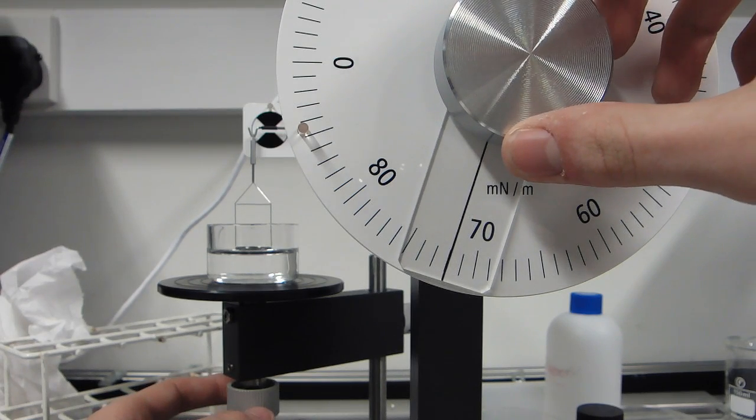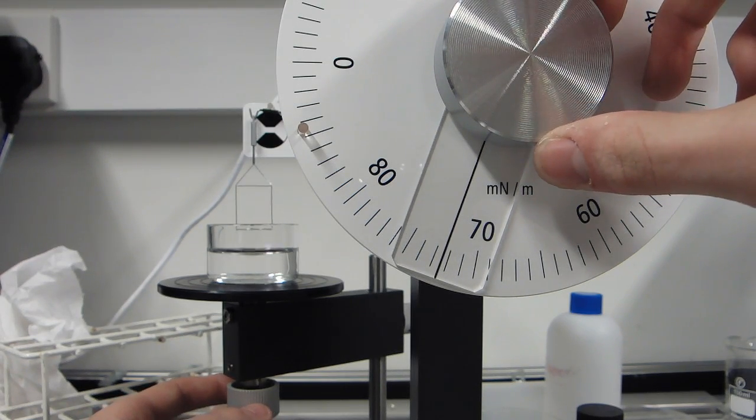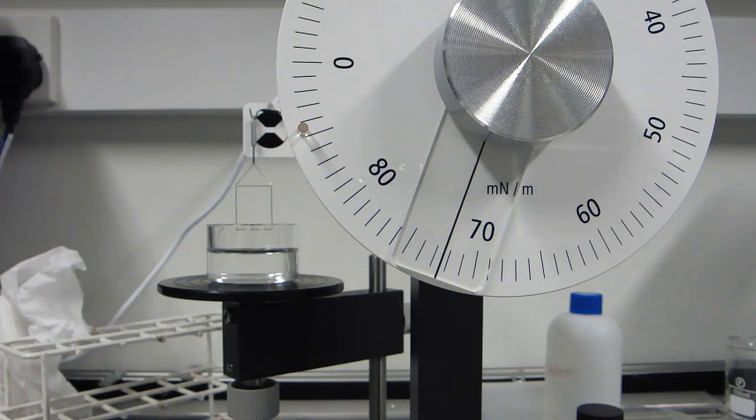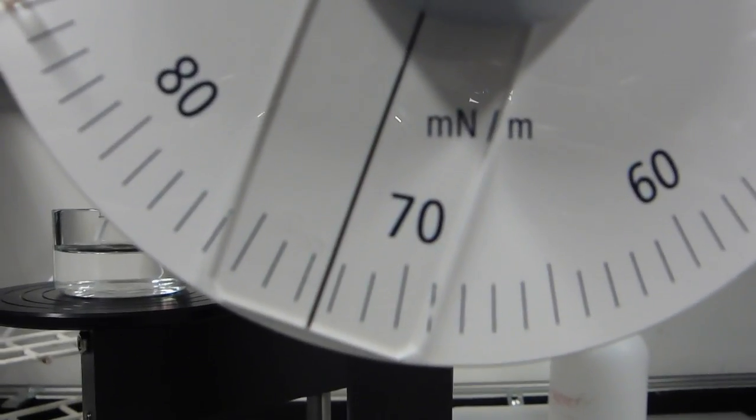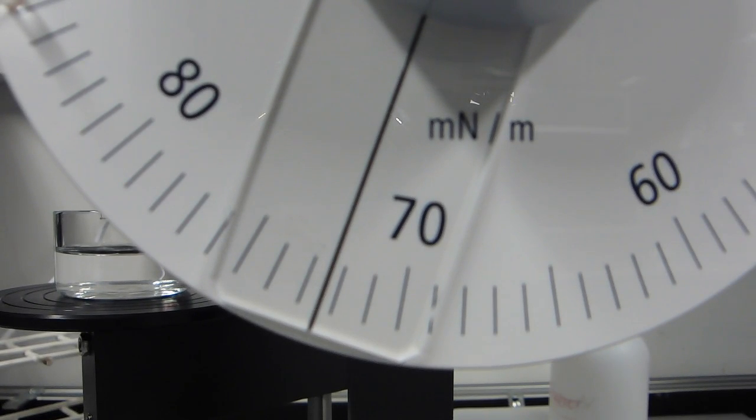When the ring breaks free from the surface, we can read off the result from the scale. In this case, the result is approximately 72 mN per meter.